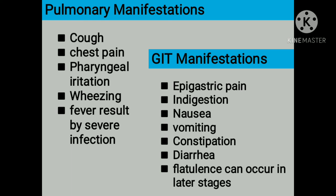There are actually two manifestations of this parasite. The pulmonary manifestations include symptoms of cough, chest pain, pharyngeal irritation, wheezing, and fever resulting from severe infection. And then the gastrointestinal tract (GIT) manifestations include epigastric pain, indigestion, nausea, vomiting, constipation, diarrhea, and flatulence.